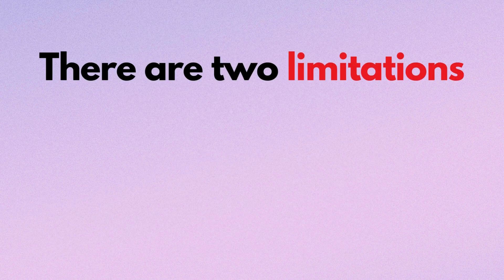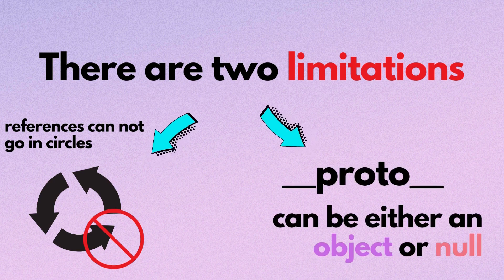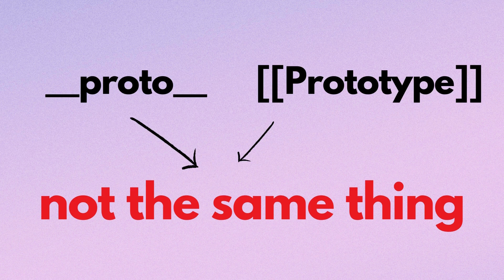There are two limitations about prototype. First, references cannot go in circles. Second, the value of __proto__ can be either an object or null — this one we already mentioned. __proto__ is a getter and setter for the prototype property, which means they're not the same thing. We'll look into why this difference is important in future lessons.